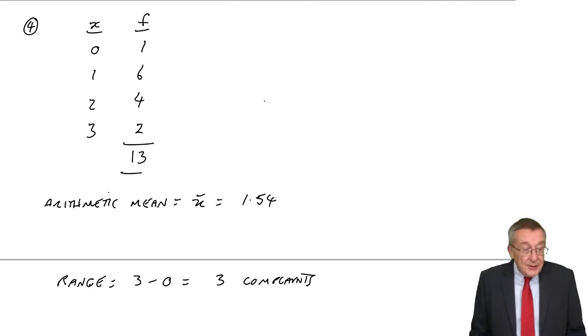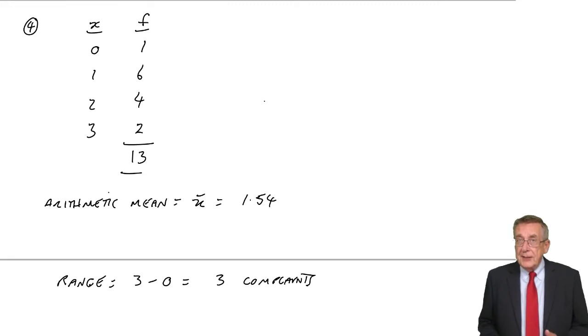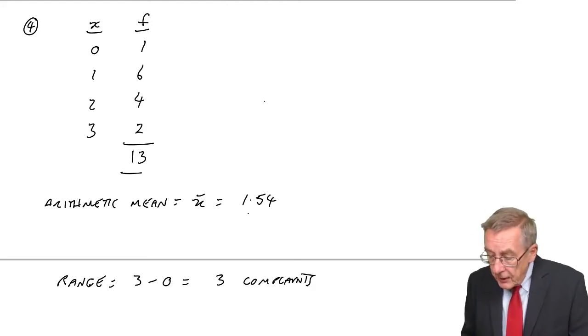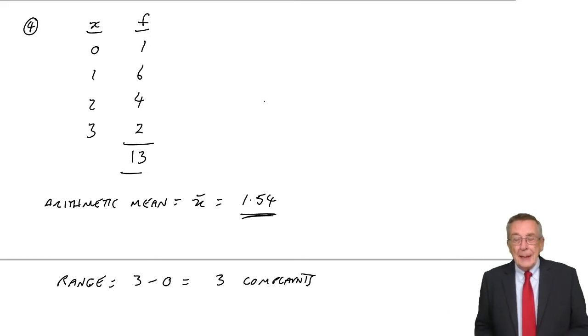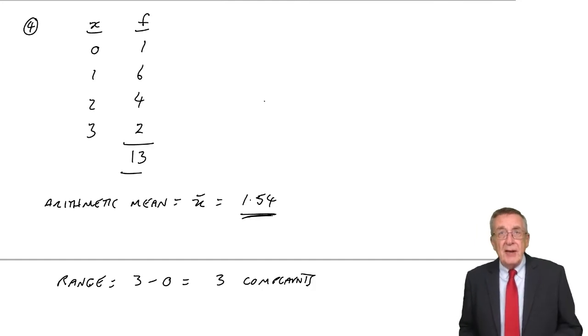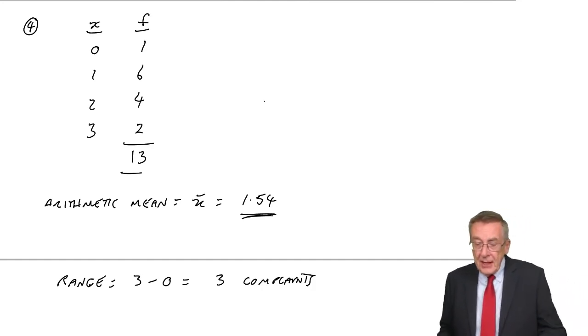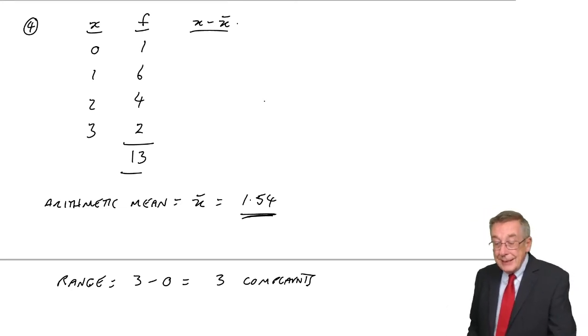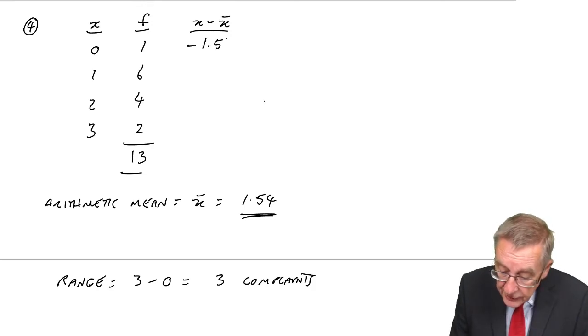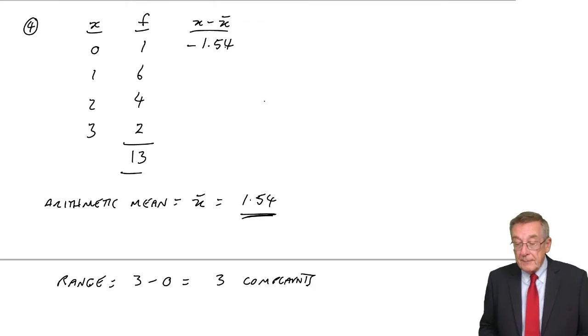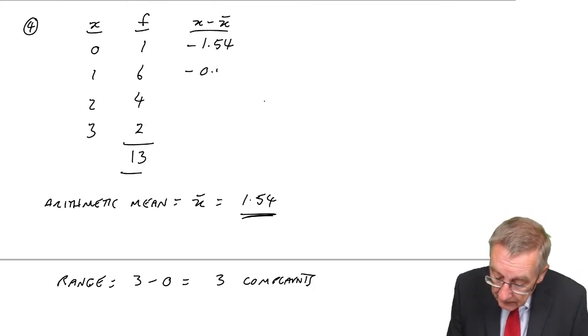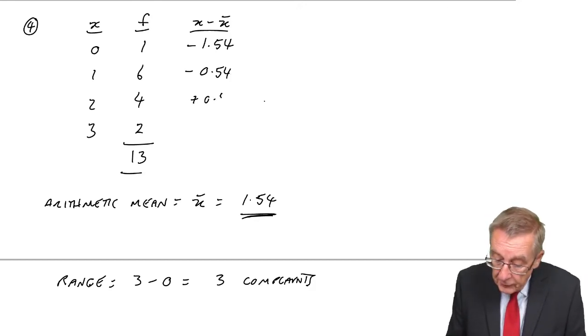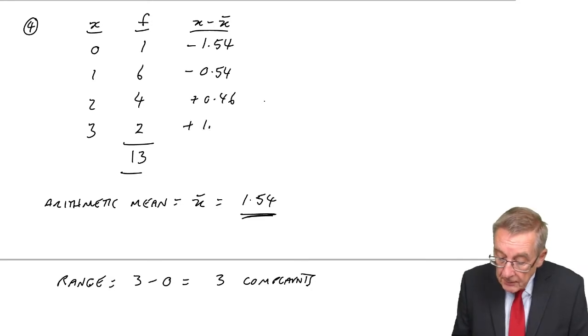And so what is much more sensible, and certainly a lot more important, is to look at something called the variance. I'll write the formula down in a moment, but we say, well, we know what the average is, 1.54. Let's see, on average, how far the observations are away from that average. We take each observation and we say, how far away was it from the average? Well, if there are no complaints, that's 1.54 below the average. X minus X bar, minus 1.54. One complaint, that'd be minus 0.54, below the average. Two complaints, 2 minus 1.54, plus 0.46 above the average. And three complaints, plus 1.46.